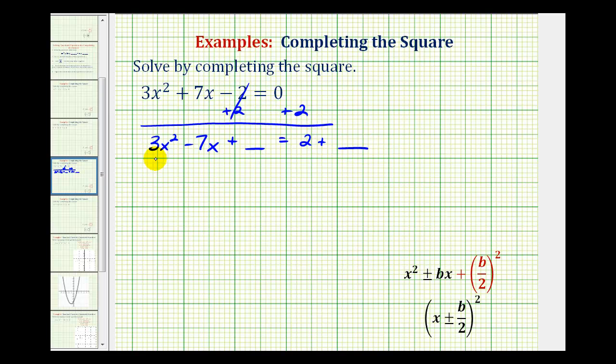We want to make this a perfect square trinomial, but before we do this, we need the leading coefficient to be 1. So we'll divide every term by 3. Now we'll have x² - (7/3)x plus a constant equals 2/3 plus a constant.